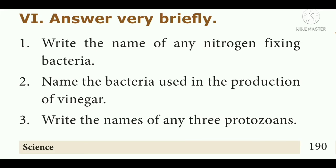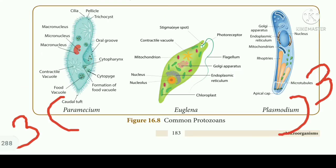Question 3: Write the names of any 3 protozoans. Answer: Plasmodium, Paramecium, Euglena.